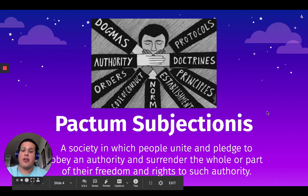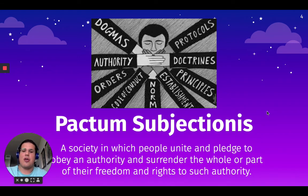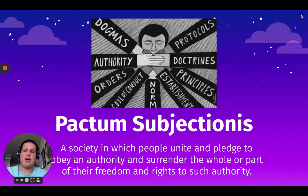The other concept is pactum subjectionis, when a society unites and pledges to obey a single authority. They basically surrender their rights and their freedom in order to get protection from such authority.